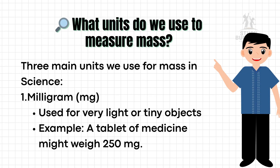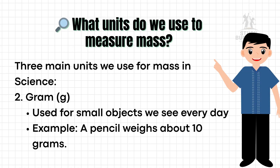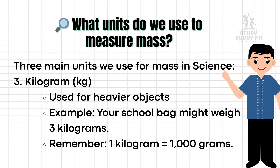What units do we use to measure mass? Here are the three main units we use in science. First, milligram (mg), used for very light or tiny objects — for example, a tablet of medicine might weigh 250 milligrams. Second, grams, used for small objects we see every day — for example, a pencil weighs about 10 grams. Third, kilograms (kg), used for heavier objects — for example, your school bag might weigh 3 kilograms.